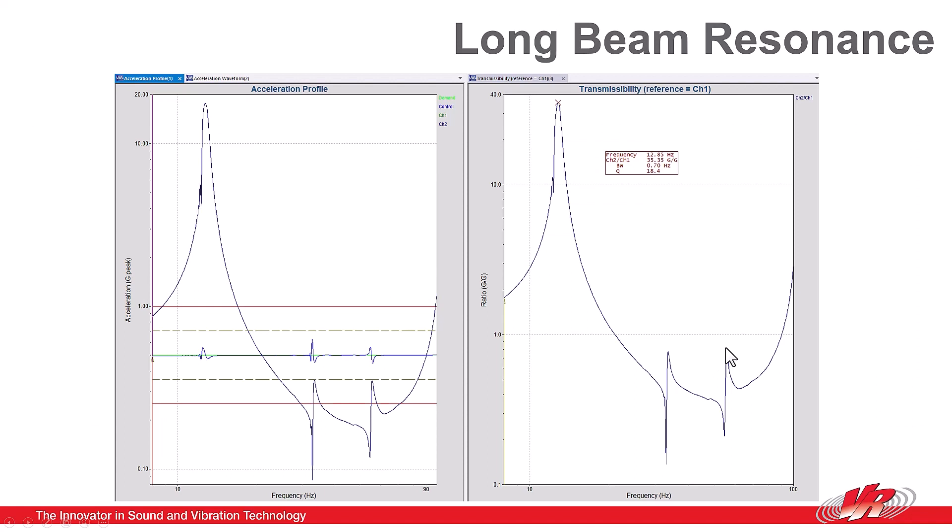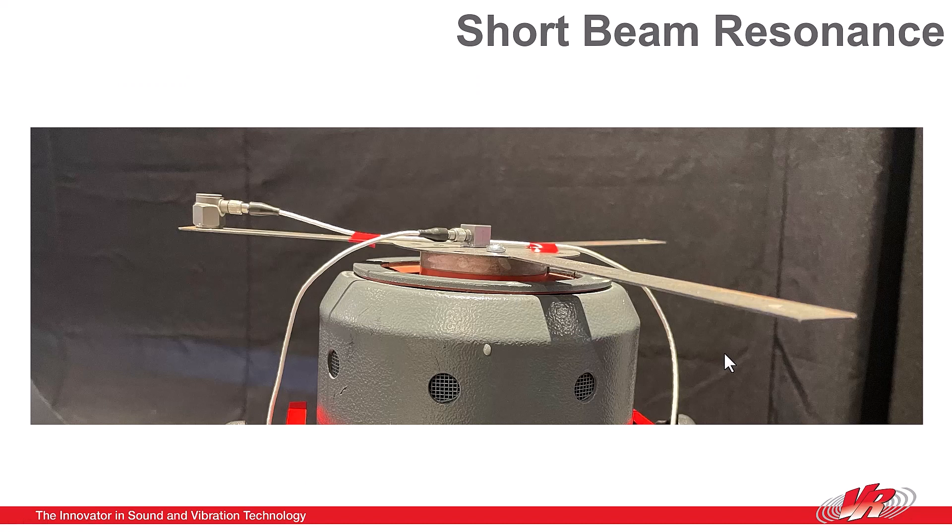Here, the shorter beam had a resonance at around 55 Hz. And the point is that when we added the mass to the short beam, it shifted the resonance down from 55 Hz to approximately 32 Hz.